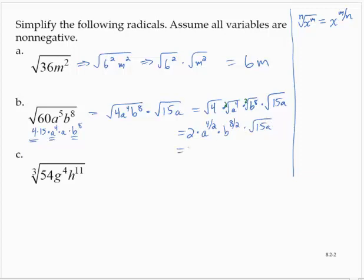So that would give me 2, a to the second, b to the fourth, times the square root of 15a.